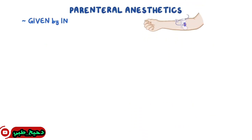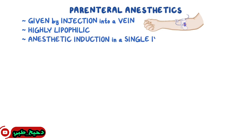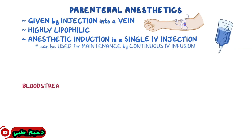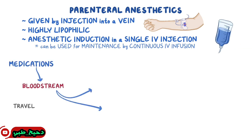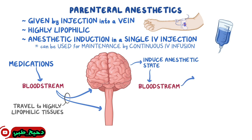Parenteral anesthetics are given by injection into a vein. They're highly lipophilic agents that are commonly used for anesthetic induction in a single intravenous injection, although some of them in special situations can be used for maintenance by continuous intravenous infusion. Once in the bloodstream, these medications travel through the body to highly lipophilic tissues that receive a lot of blood, like the brain and spinal cord, where they can induce the anesthetic state. After this, the medications diffuse back into the bloodstream, get metabolized by the liver, and then excreted by the kidneys.